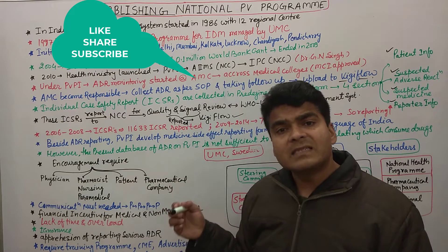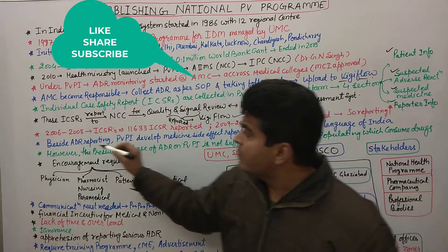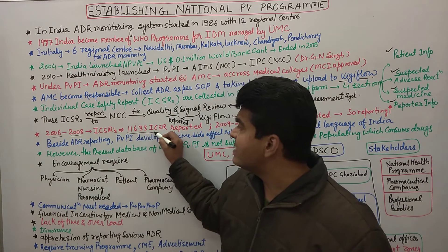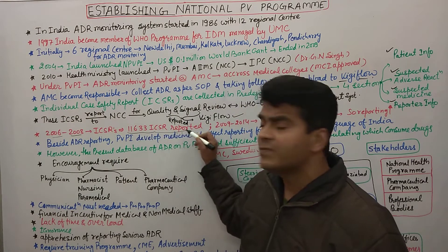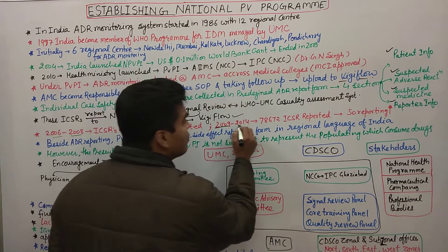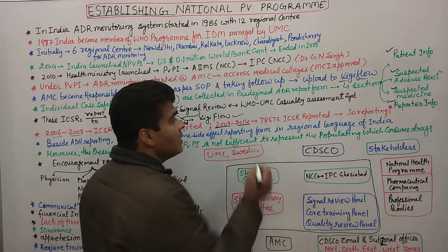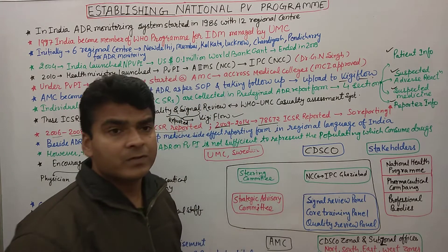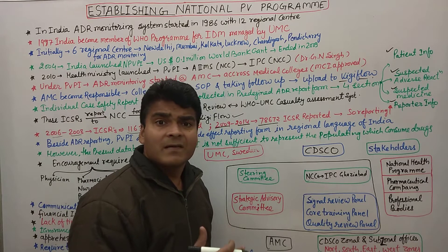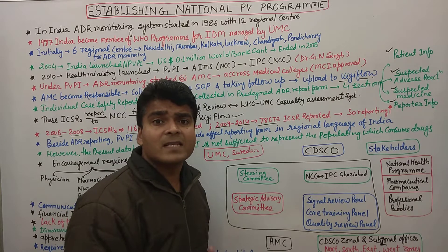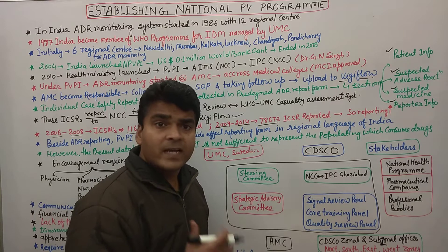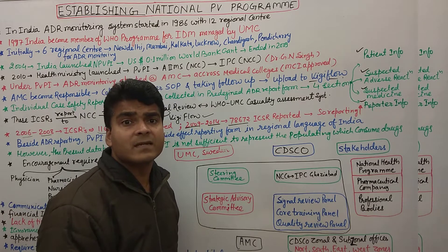Regarding data collected by India: from 2006 to 2008, almost 11,633 ICSR reports were filed. From 2009 to 2014, this grew to 78,672 ICSR reports. Reports are increasing as healthcare professionals update their knowledge and are encouraged to report information, showing a day-by-day increase in the reporting system.